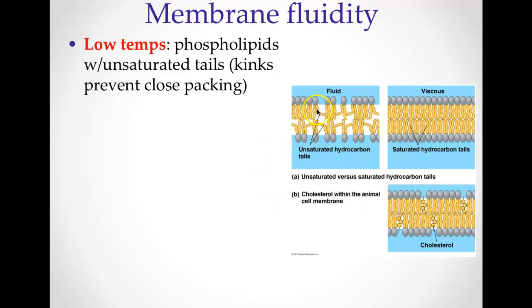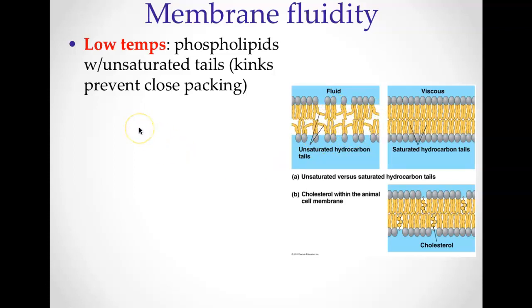What's going to happen is that the phospholipid tails are going to form double bonds between the carbons, causing them to be unsaturated tails, and they're going to kink. Normally the tails are straight with no double bonds, but when it gets really cold, the membrane will adjust itself by creating double bonds between some of the carbons and the tails will kink out. This is going to prevent them from packing too close together and forming solids.